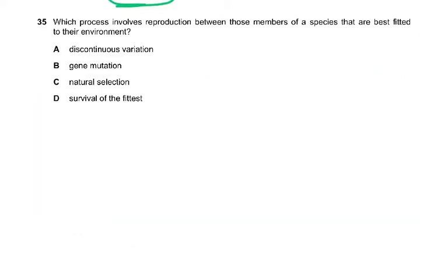Question number 35: which process involves reproduction between those members of a species that are best fitted to their environment? For example, trees with medium roots, short roots, and long roots experience drought — the ones with long roots survive and reproduce, passing that trait on. This process is natural selection. Natural selection results in the best-fitted individuals surviving and reproducing, changing the allele frequency and resulting in evolution.